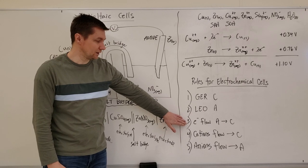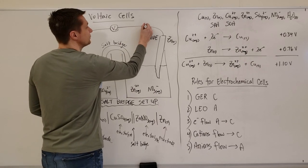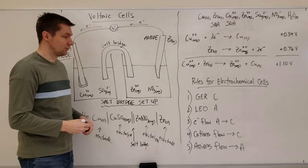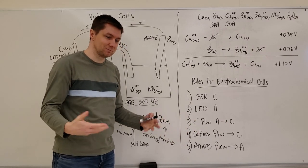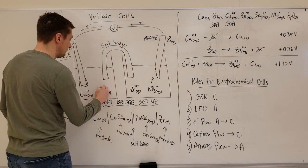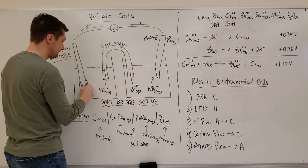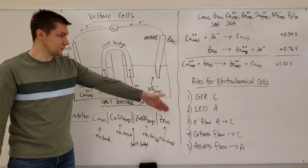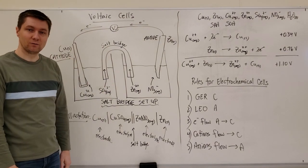Step three: electrons flow from the anode to the cathode, so we label that direction on the diagram. The last two rules are fairly simple: cations flow to the cathode, and anions flow to the anode. My anions flow up through the salt bridge in one direction, and my cations flow toward the cathode. These five rules are now labeled on the diagram - that's what you need to know about voltaic cells.